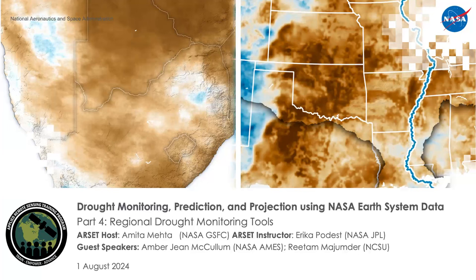Hello everyone. Welcome back to the final part of this training on drought monitoring, prediction, and projection using NASA Earth System data. This is part four, and today we will focus on the regional drought monitoring tools. Our RCET instructor today is Dr. Erika Bodest, from NASA JPL, and we have guest speakers Dr. Amber Jean McCollum from NASA Ames and Dr. Ritam Majumdar from North Carolina State University.